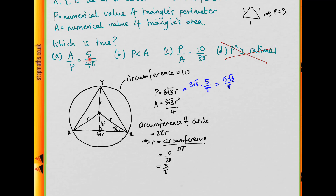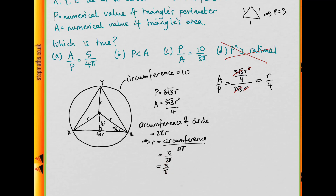Let's work out a divided by p to help with the remaining options. a/p = (3√3·r²/4) ÷ (3√3·r). The 3√3 terms cancel, and one r cancels, giving a/p = r/4. Since r = 5/π, we get a/p = 5/(4π). We can see that this matches option A, so option A is true.